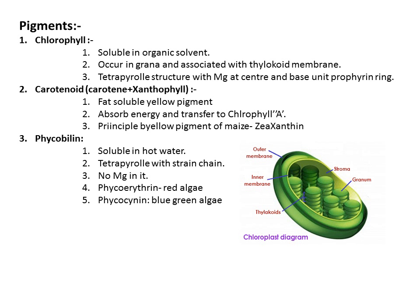We will discuss about the pigments that are very necessary for photosynthesis. First one is chlorophyll. Some important points about chlorophyll: first, it is soluble in organic solvent. A question may be asked like what is it soluble in — organic solvent, inorganic solvent, or hot water — so the answer is organic solvent.